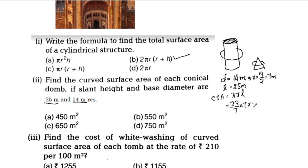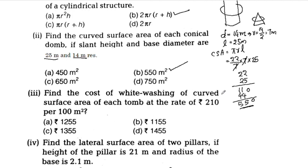The diameter is 14m, so R = 14/2 = 7m. Substituting π = 22/7, R = 7, and L = 25, we calculate the CSA. The total area for both domes comes out to 550 m².